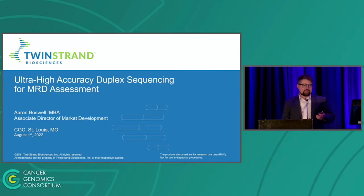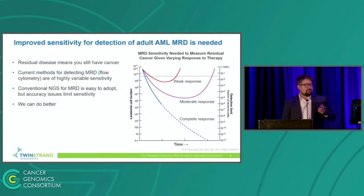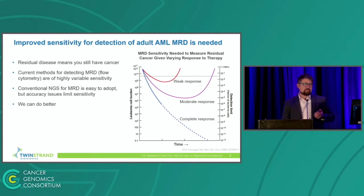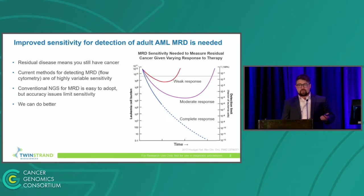The products I talk about today are for research use only. So, AML MRD — we're talking about leukemia. If you still have MRD, you still have cancer. Current methods for assessing AML MRD, like flow cytometry, are good, but somewhat variable between labs and operators. Standard NGS is an emerging method that is more robust and less variable, but it leaves something to be desired on the sensitivity side. There are better methods, and I'll tell you about one right now.